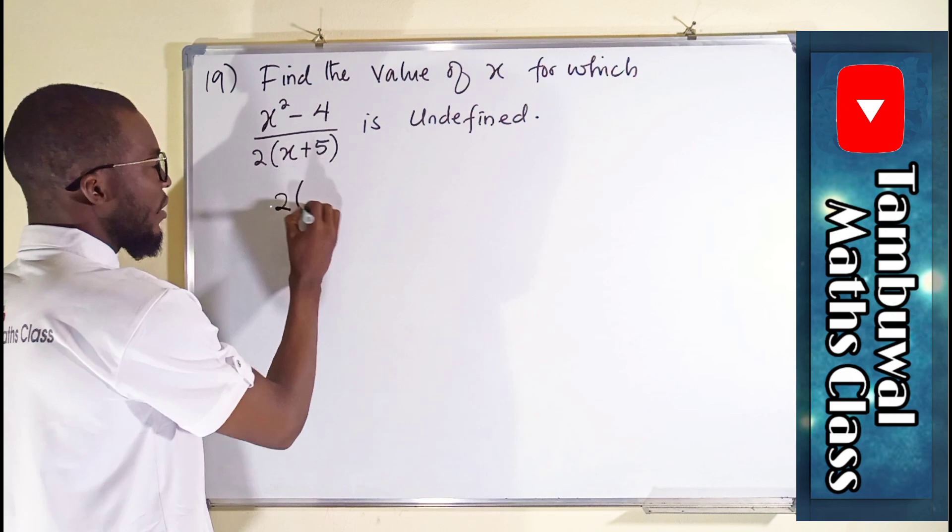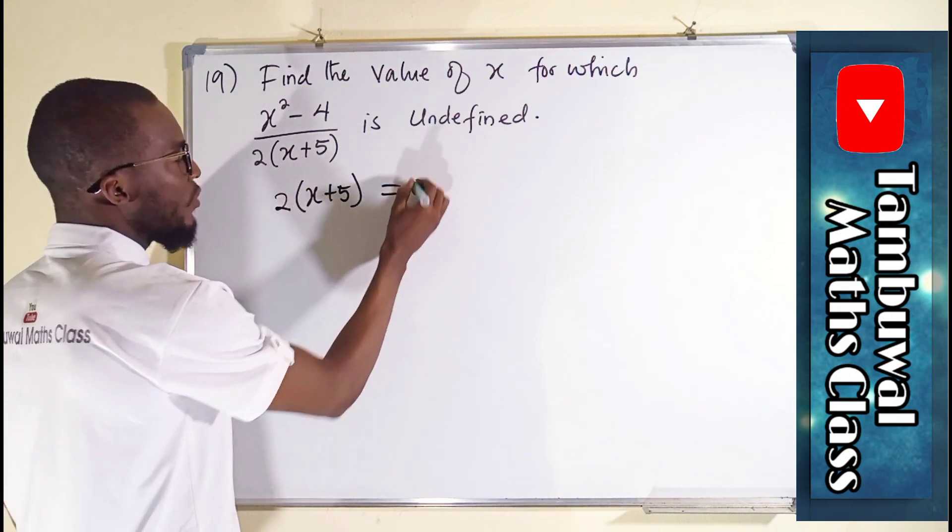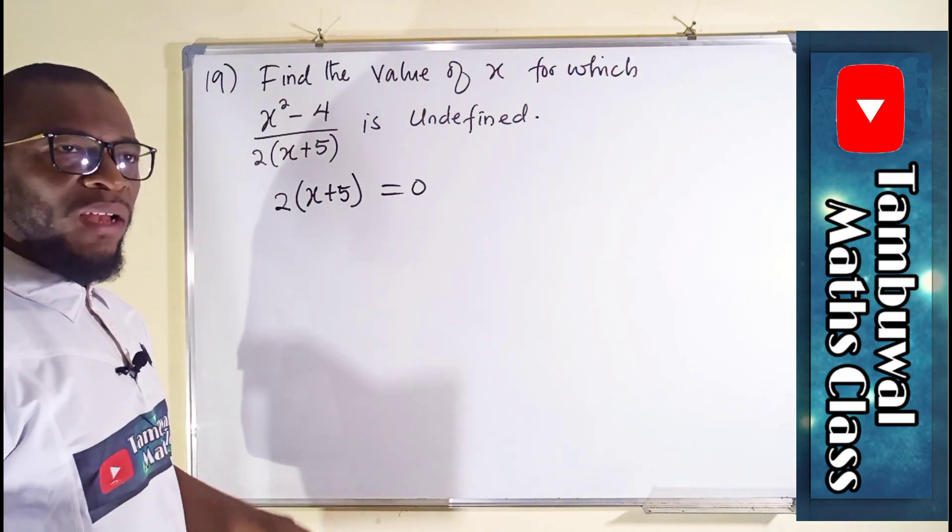So we take this 2 times x plus 5 and set it to be equal to 0 and find the value of x and that's our answer.